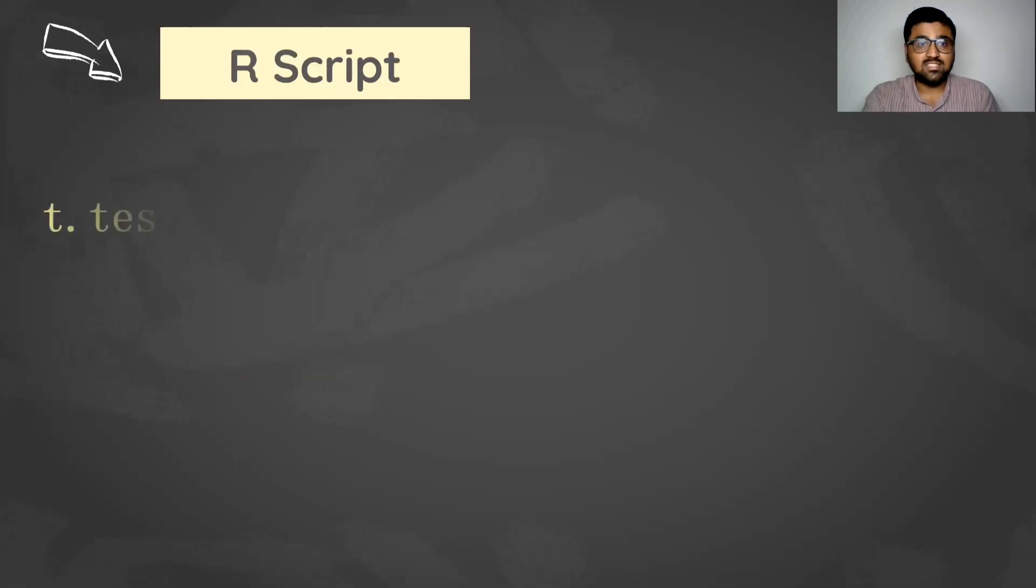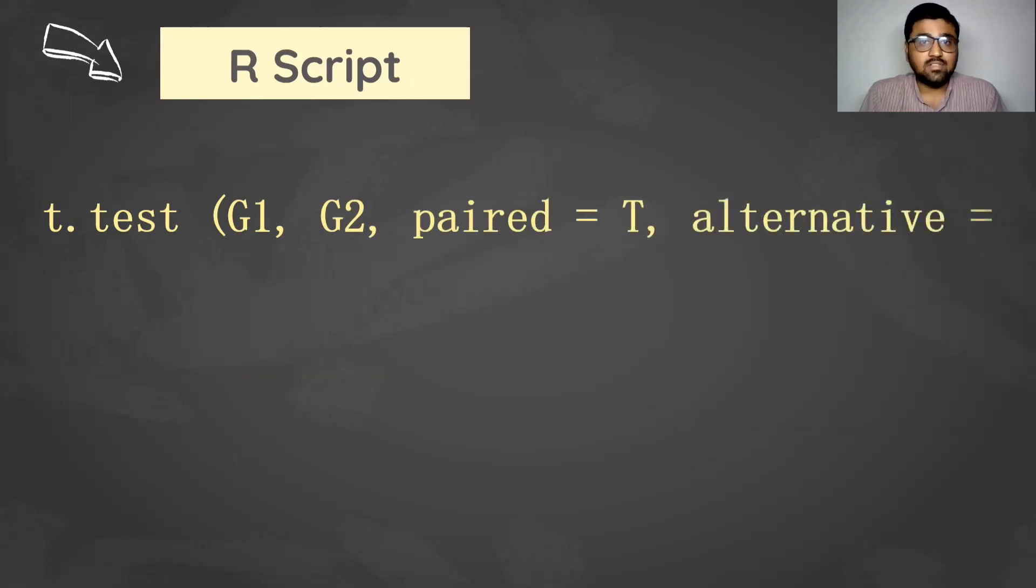Now we are going to use this R script: t.test group1, group2, paired equals true, alternative equals two-sided and confidence level equals 0.95. This is the R script that you can use to perform paired t-test in R studio.